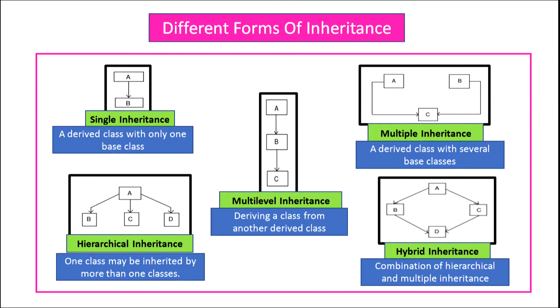In multiple inheritance, C is the child class and A and B are the base classes of the child class C.